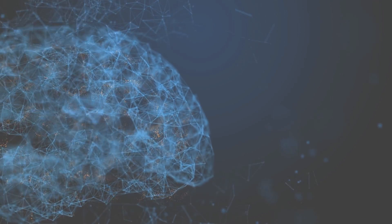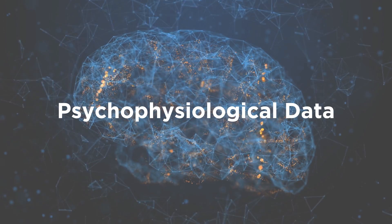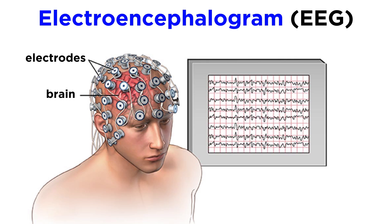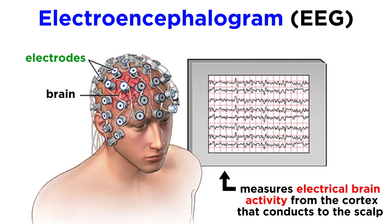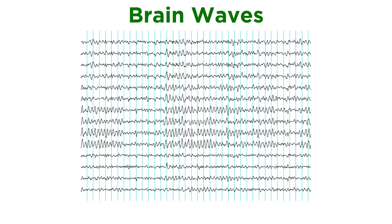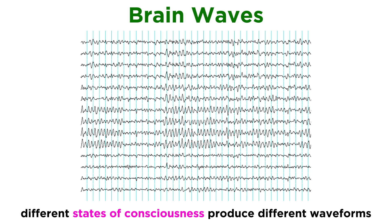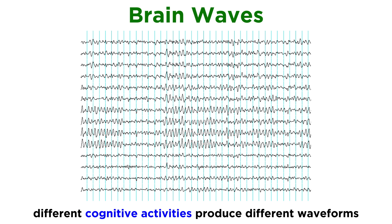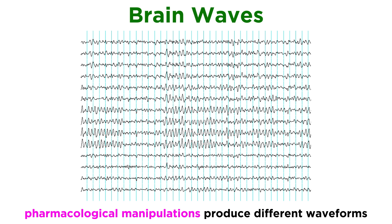That covers the primary brain imaging techniques, so let's move on to methods of recording psychophysiological data. The most familiar of these will be the electroencephalogram, or EEG. This technique places electrodes on the scalp in a noninvasive fashion to measure electrical brain activity that originates from the cortex and conducts to the scalp. EEG is actually measuring voltage differences between different scalp areas that result from underlying brain activity. The data appears as wave forms called brain waves, and different states of consciousness will produce quite different and rather distinct wave forms, as will different cognitive activities, brain disorders, and pharmacological manipulations.